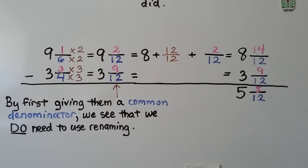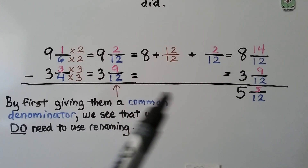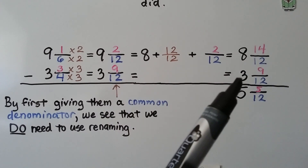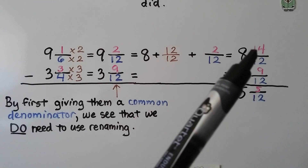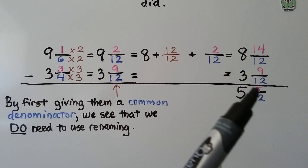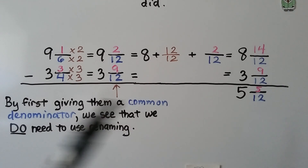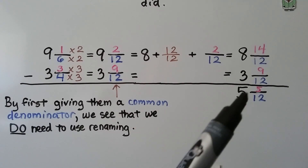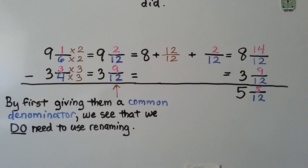Now we can take away the subtrahend 3 and 9 twelfths. 14 minus 9 is 5 — that's 5 twelfths. 8 minus 3 is 5 — we have 5 and 5 twelfths. So it's very important to first give them a common denominator, then we decide whether we need to use renaming or not.